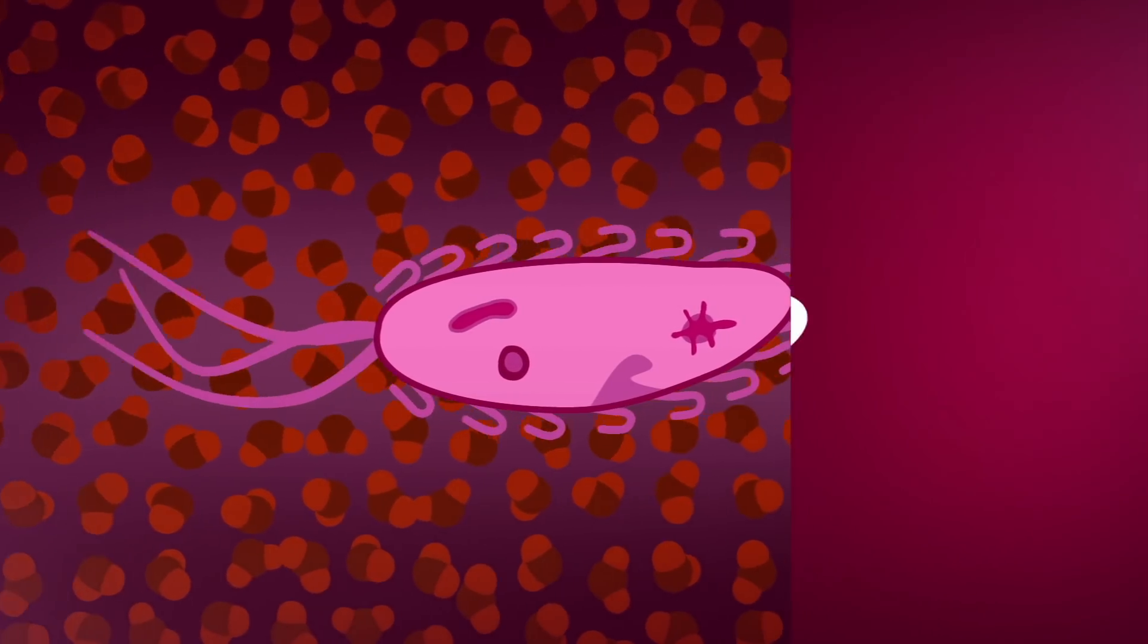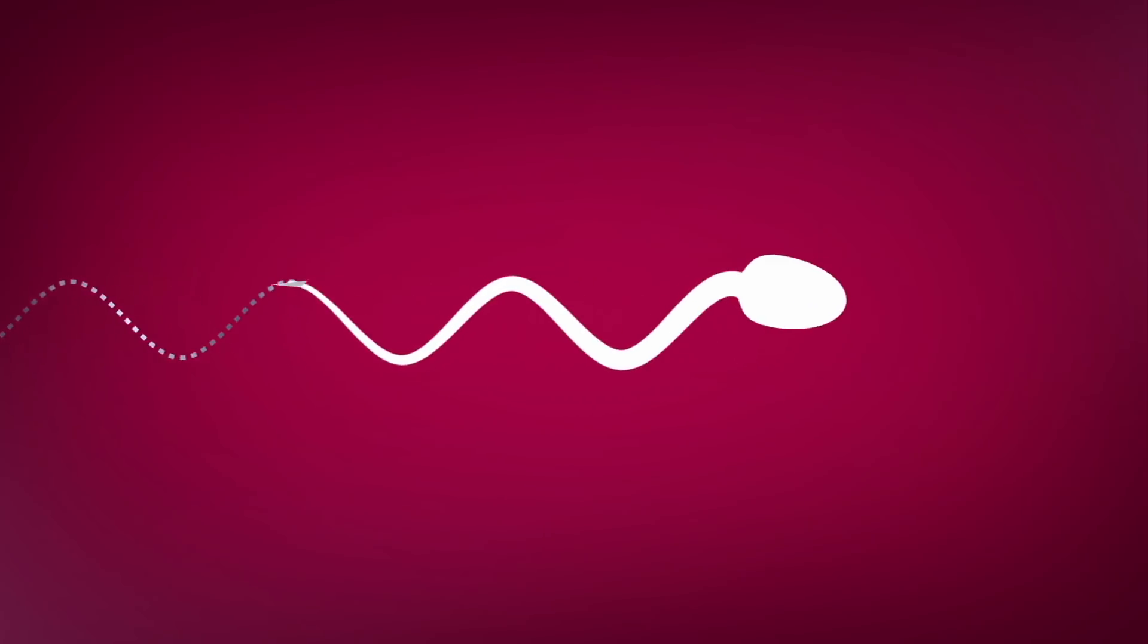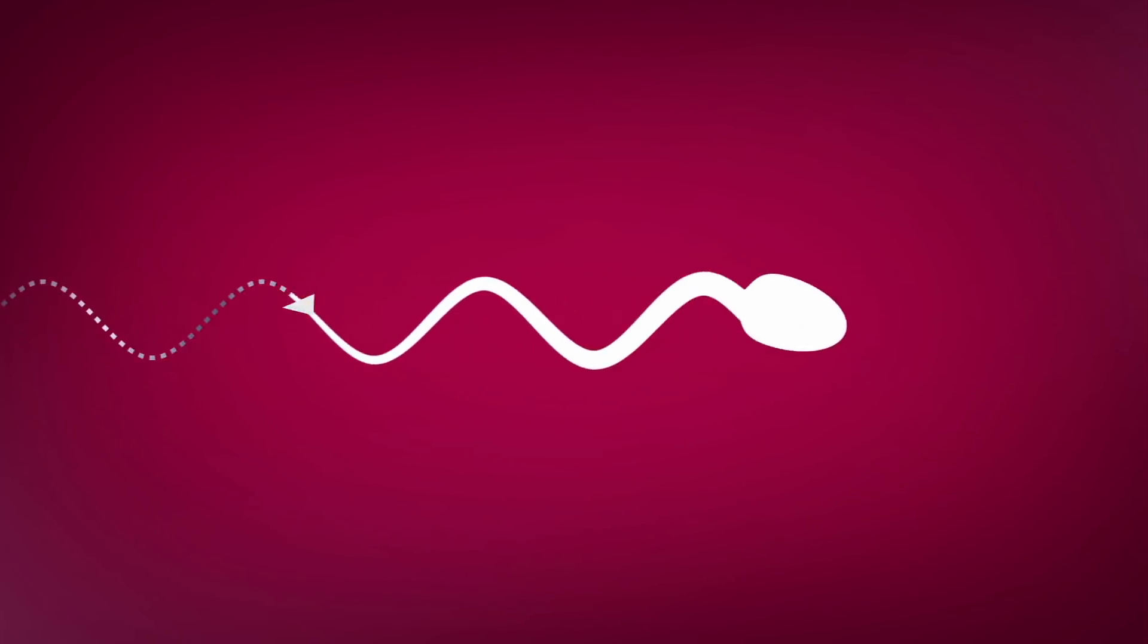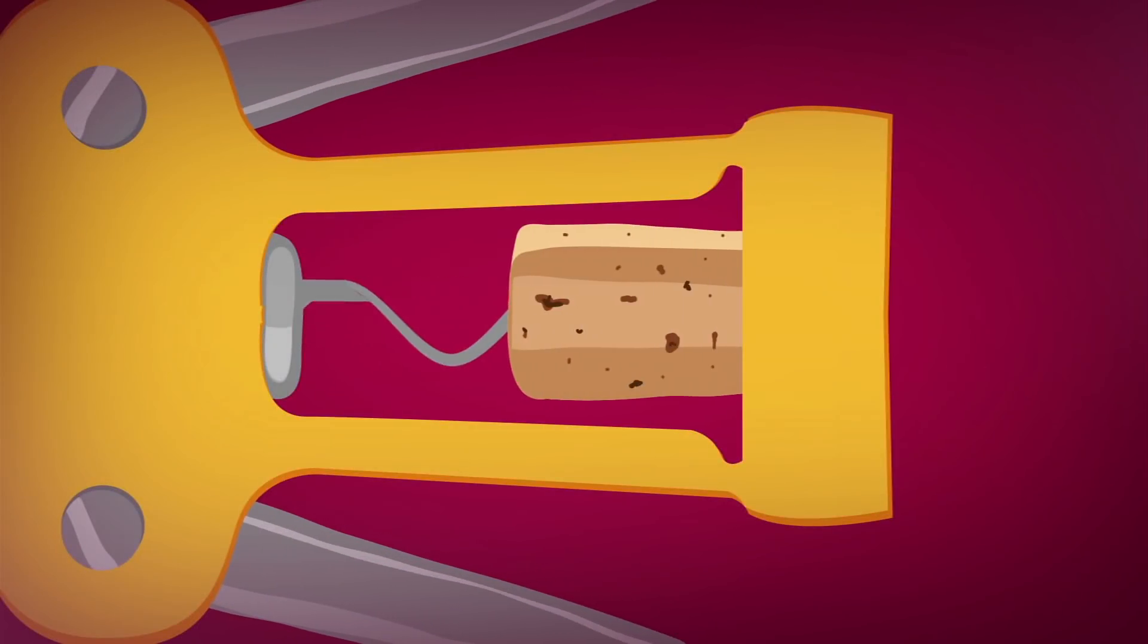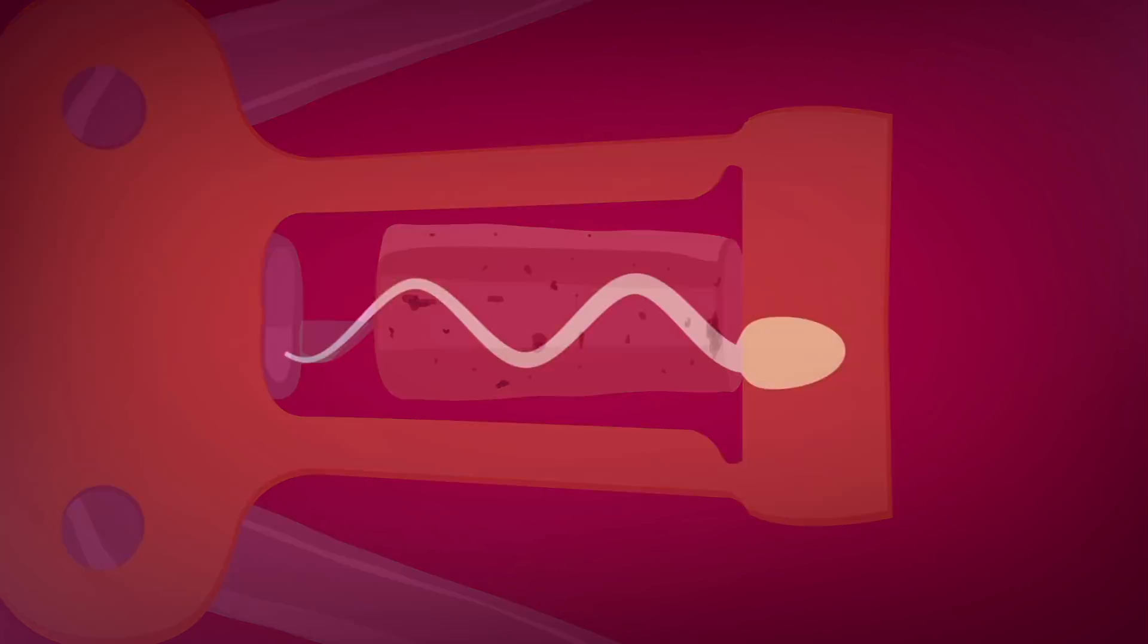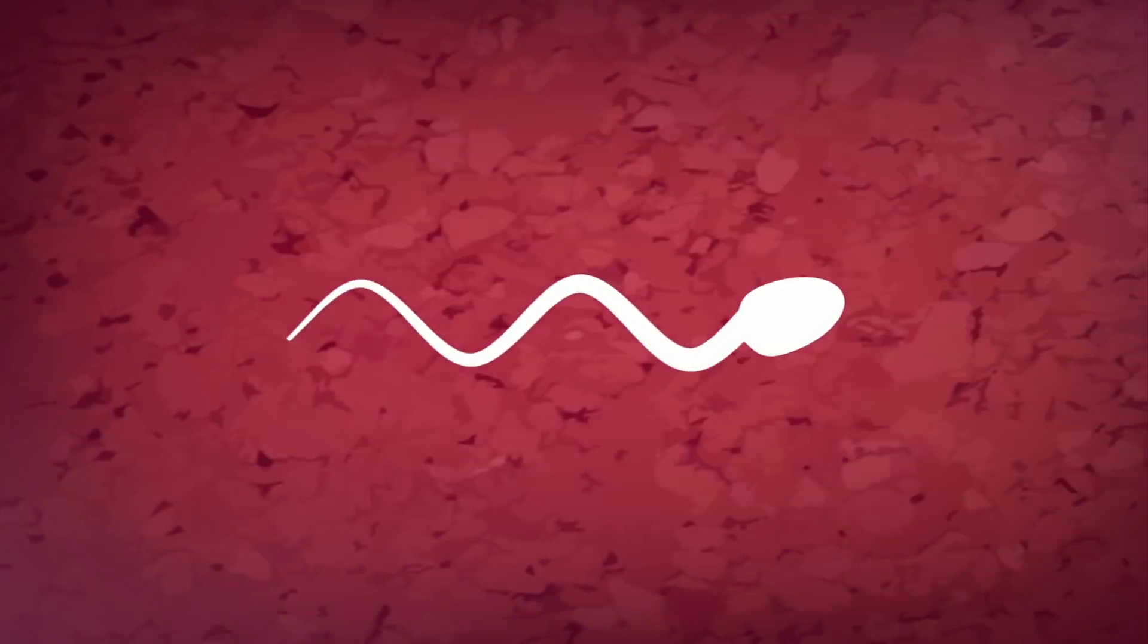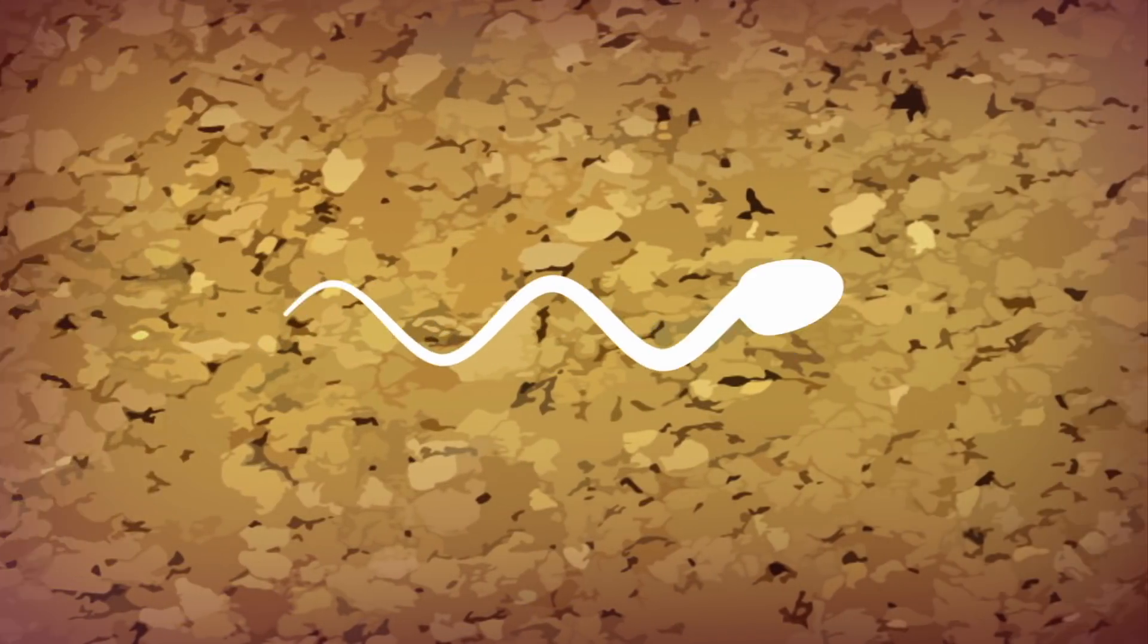But there's an even more ingenious solution arrived at by bacteria and sperm. Instead of wagging their paddles back and forth, they wind them like a corkscrew. Just as a corkscrew on a wine bottle converts winding motion into forward motion, these tiny creatures spin their helical tails to push themselves forward in a world where water feels as thick as cork.